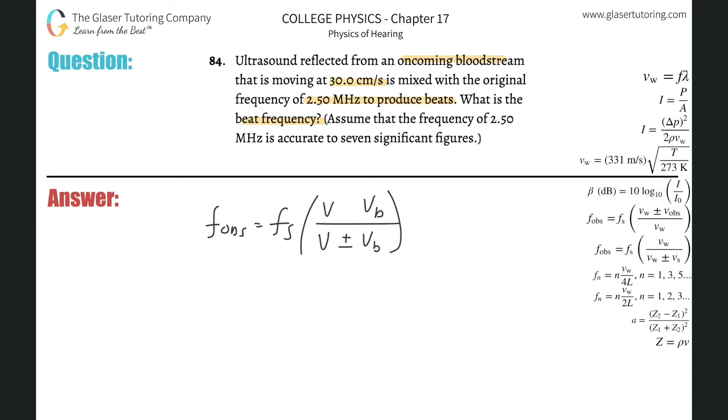Put a plus sign at the top and then a minus sign at the bottom. And now we can basically solve this. We have to find the observed frequency and then we can find the beats.